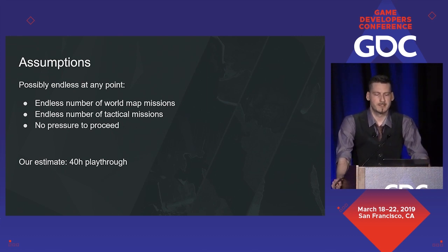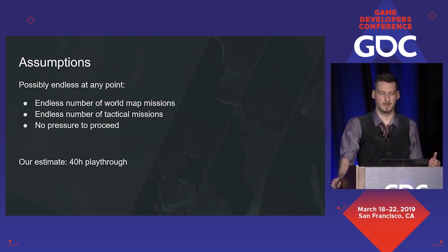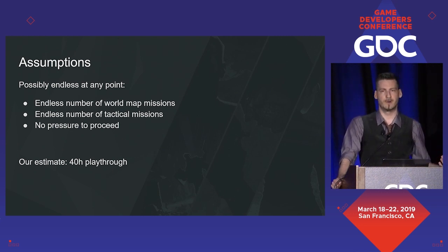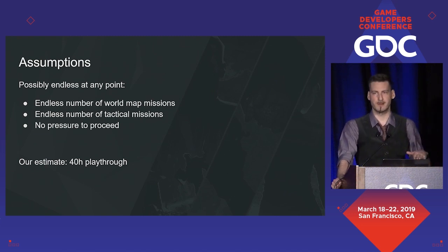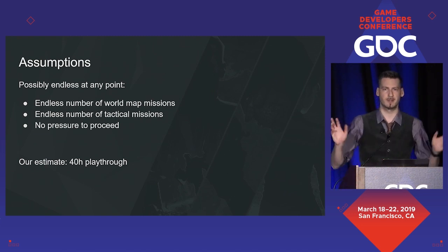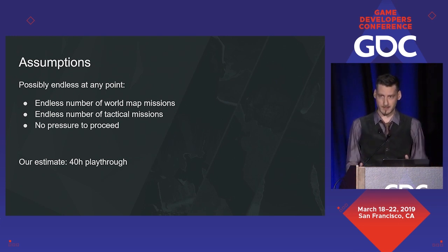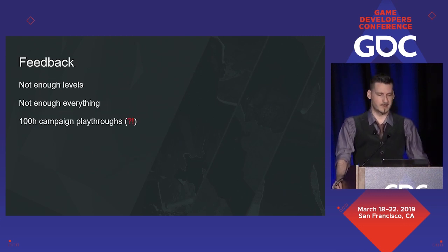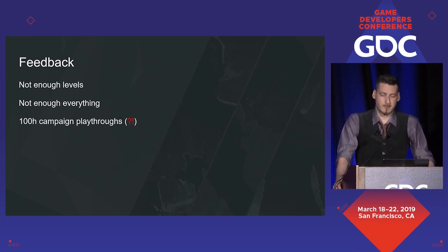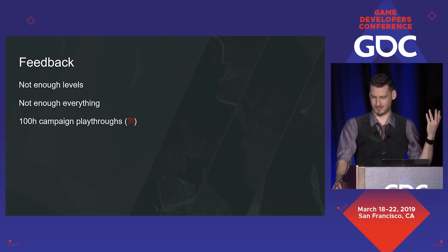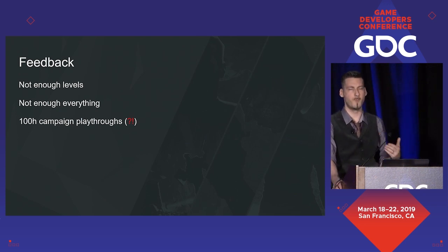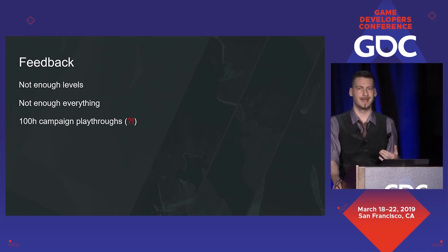We wanted the game to be possibly endless at any point — you don't have to proceed unless you want to. You can collect loot, gather secrets, level up your agents, and when you feel ready, move on. No pressure. Well, in terms of gameplay and numbers, no pressure. Our estimate was 40 hours for a campaign playthrough. The feedback was surprising: it's a boring, repetitive grind with 100-hour playthroughs. Why would players take more time to go through the campaign and then complain about it? Why would they make their path boring and then complain that it's boring?